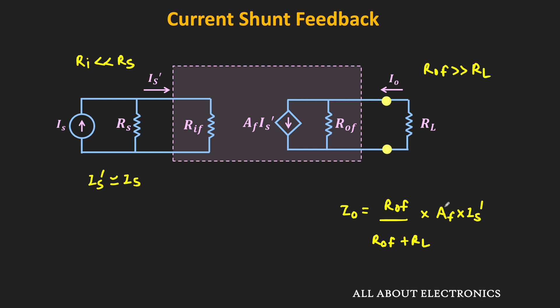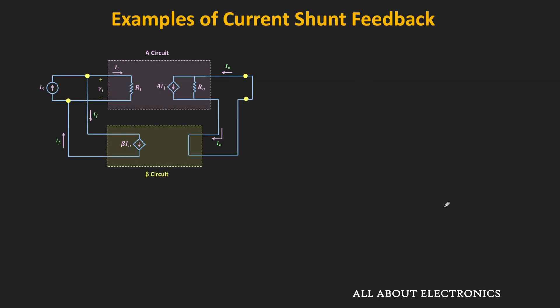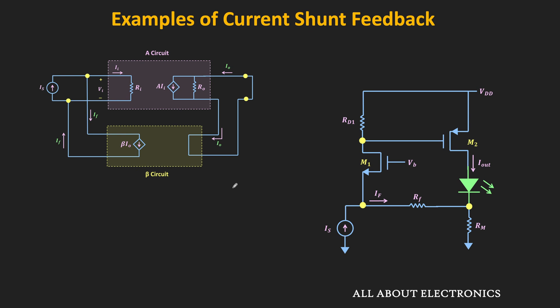Now let us see how, in actual circuits, this feedback is implemented. In this current shunt feedback amplifier, the feedback network samples the output current and the fraction of the output current is subtracted from the input current via the shunt connection. This circuit is an example of the current shunt feedback. The drain current of MOSFET M2 is the output current, and it is flowing through the laser diode, which acts as a load resistor. These two resistors form the feedback network.